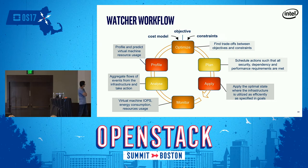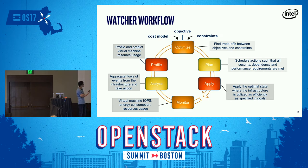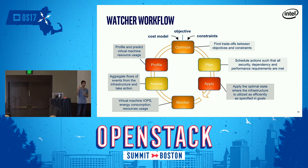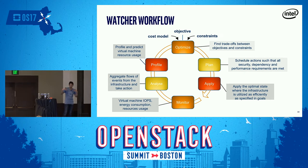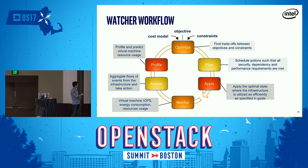This is the workflow of Watcher. First, it monitors your cloud via Ceilometer and other monitoring services. Then it analyzes — it takes aggregate flows of events, does some analysis, profiles your VMs, and based on a cost model, objective, and your cloud constraints, it comes up with optimization schemes. Those schemes are presented in the form of action plans. An action plan has a set of actions — Watcher is telling you these are the actions you need to take to achieve your goals. You can automate it, or a cloud admin can run it manually, and you can use Watcher's Applier component to apply those actions.